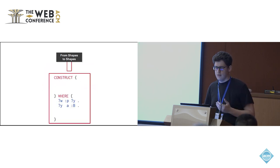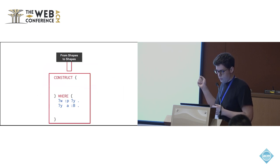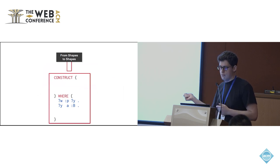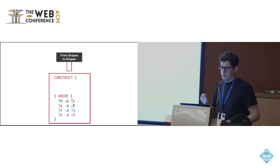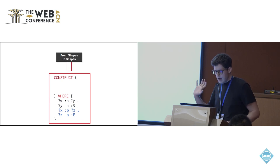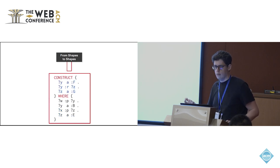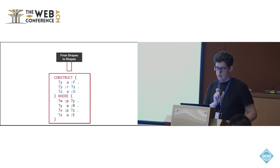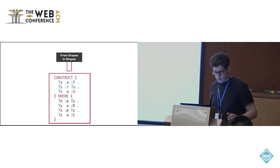Let's look at a simple example. Here we have a SPARQL CONSTRUCT query — in our paper we support conjunctive queries specifically. We have variable Y matched on type B and some incoming property P, and another pattern matching Z on E with an incoming P property. With bindings from matching this pattern, we construct new triples: type F for all the Y's, type G for all the Z's, and some R property between them.